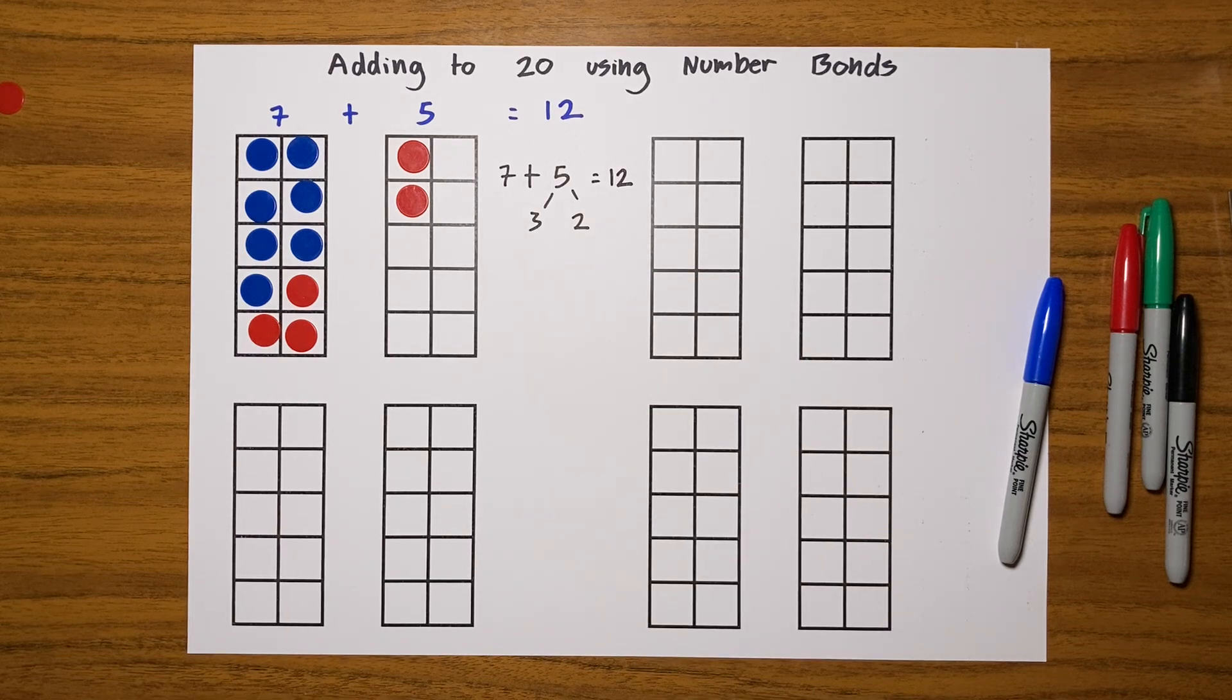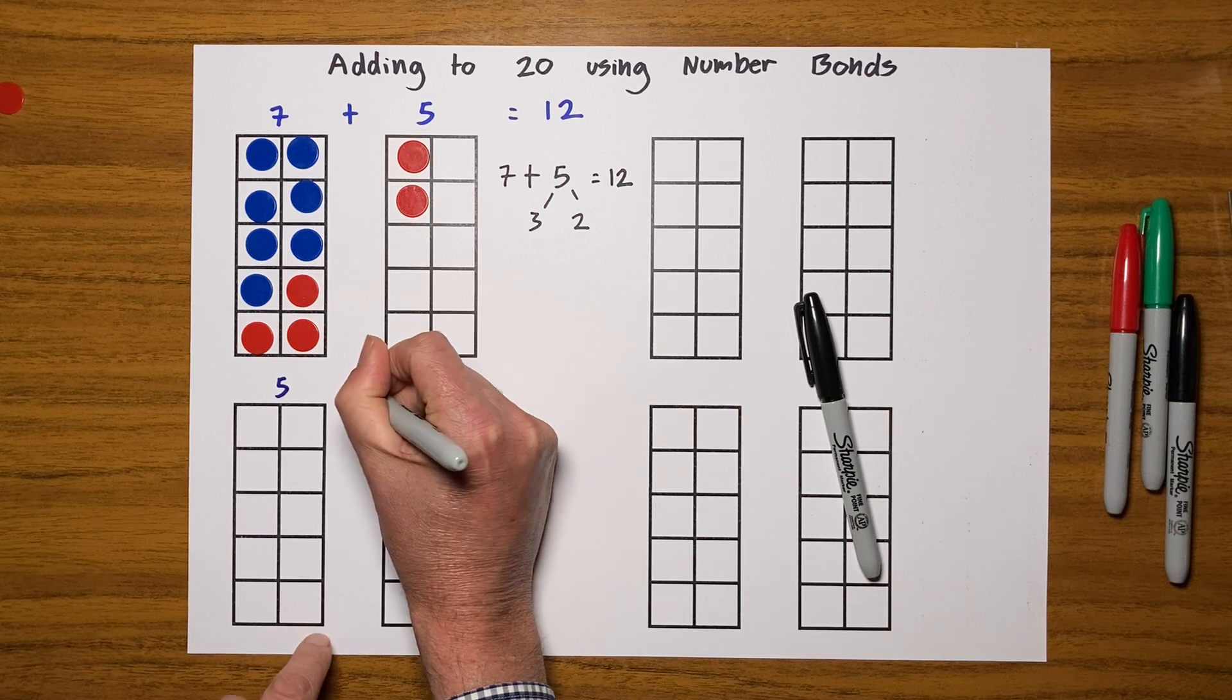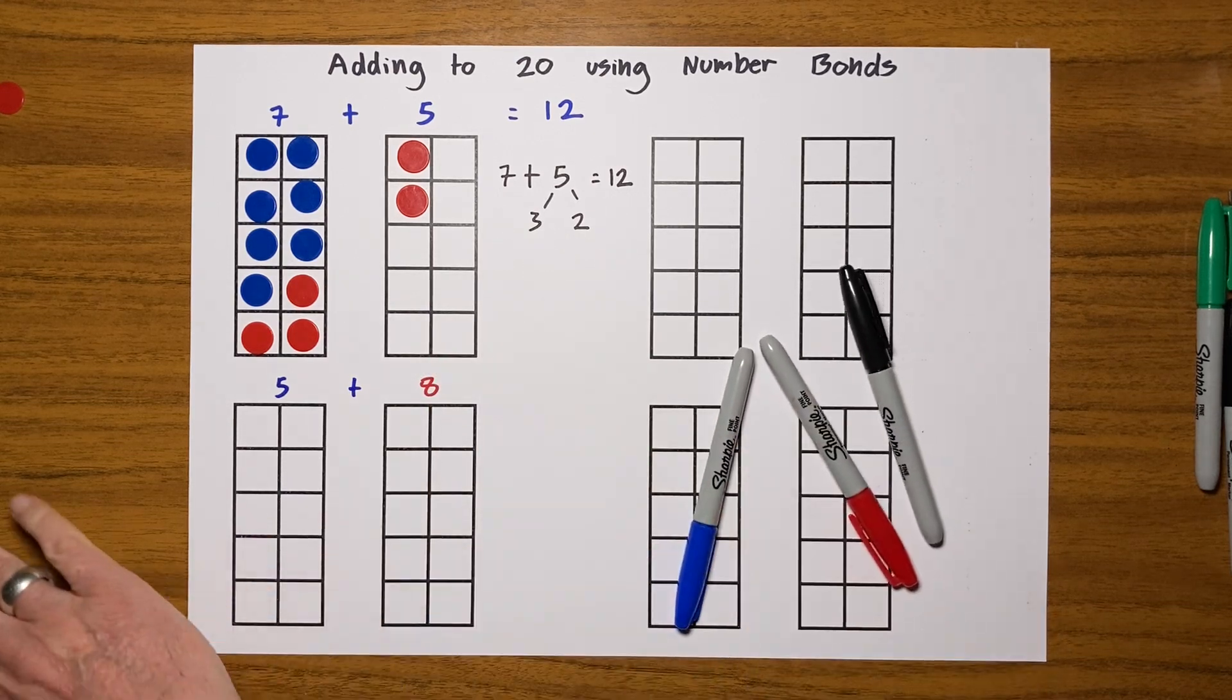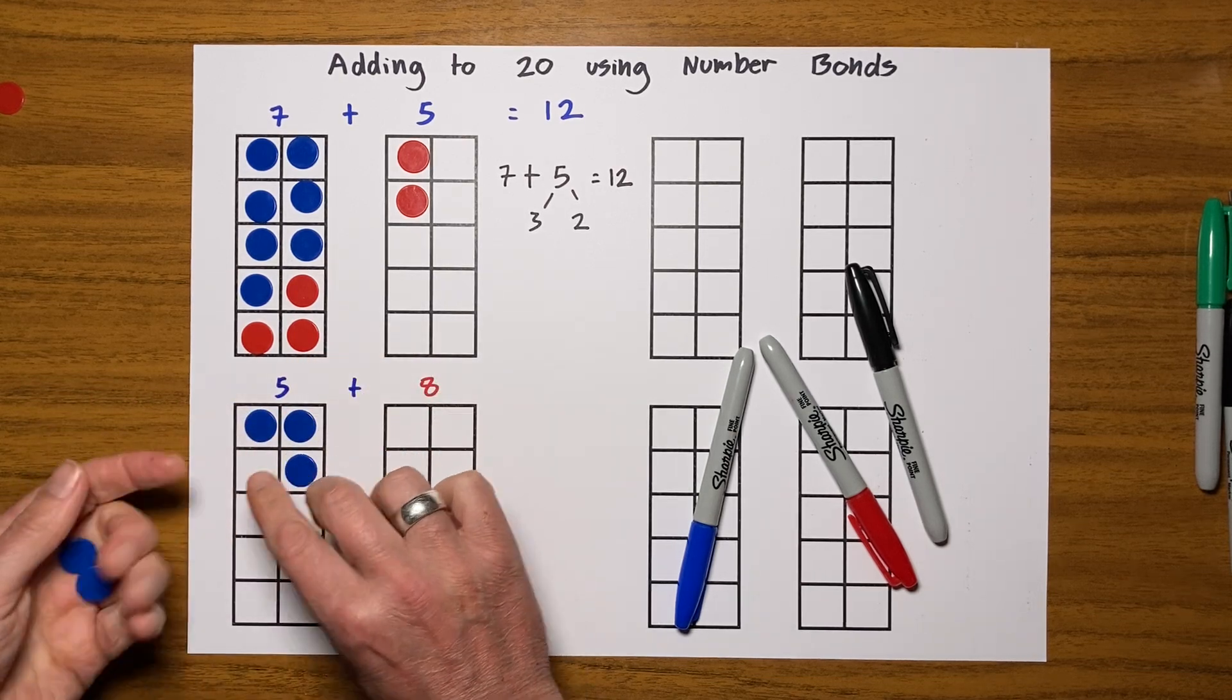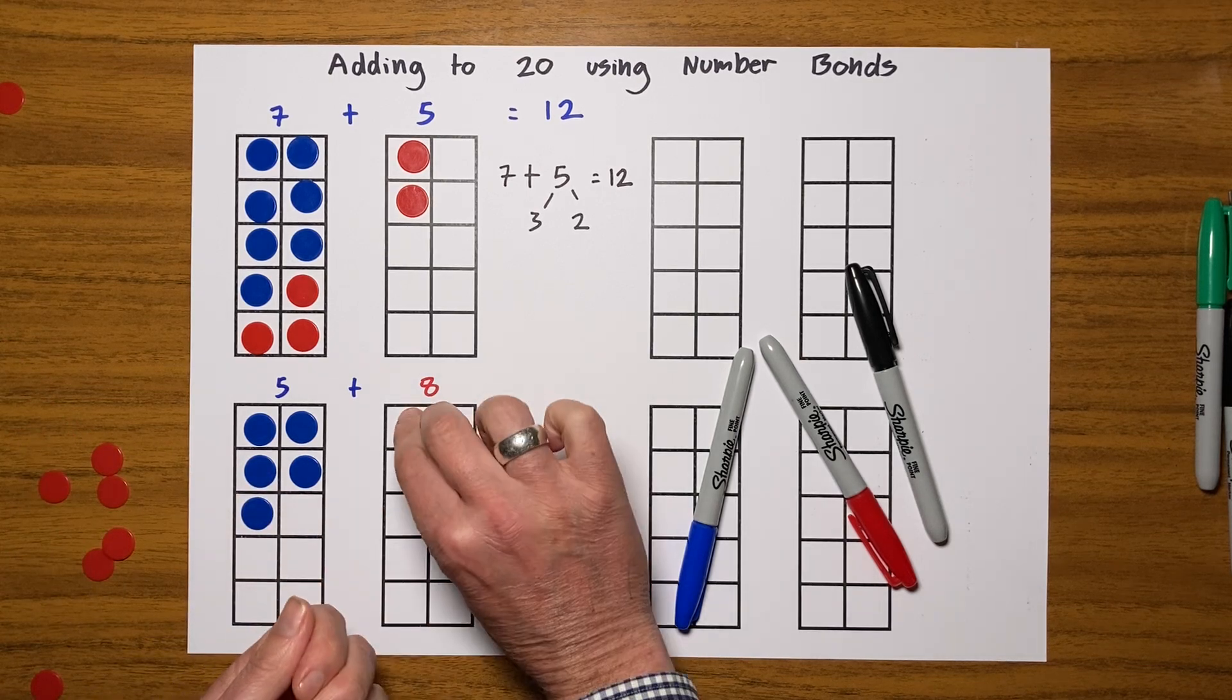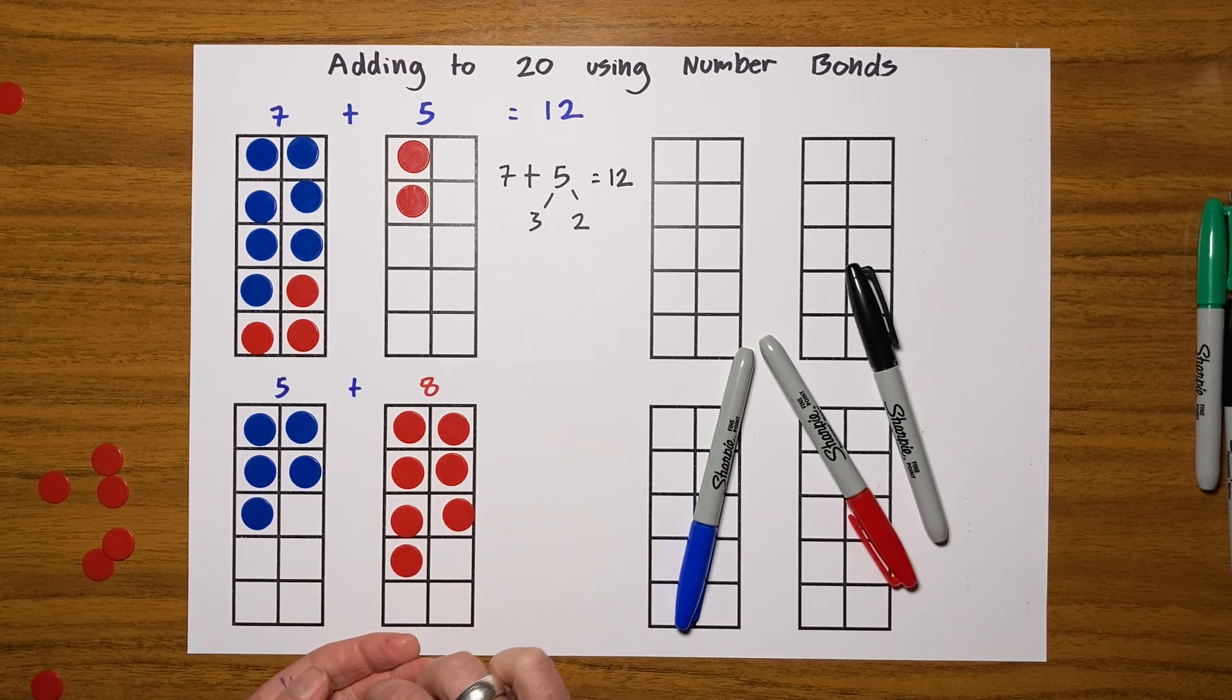Let me show you some more examples of this because it's a really powerful tool. Let's try 5 plus—I'm going to be good this time, I'm going to get my red pen out—5 plus 8. Okay, so let's get 5 blue ones in: 1, 2, 3, 4, 5. There we go. And I want 8 red ones. Quite good to count in 2s: 2, 4, 6, 8.